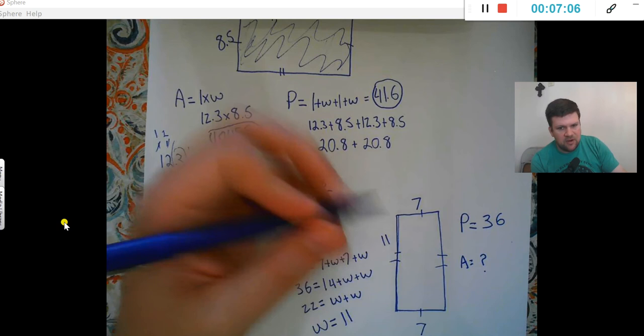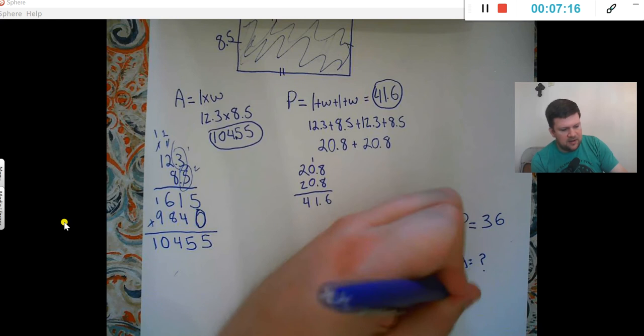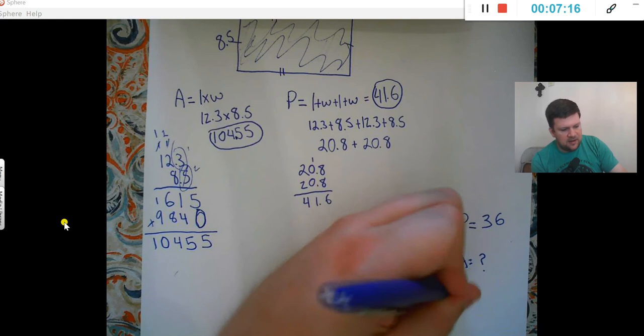So, now, once I've figured out this width is 11, right there, to do area, I just do length times width. So, 7 times 11, and the answer for that area, area equals 7 times 11. So, area is 77.